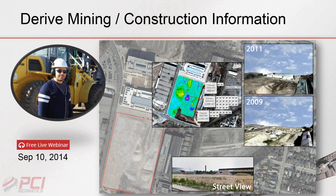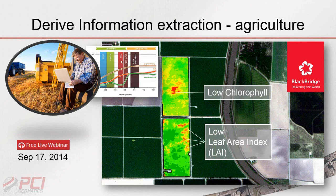We also delivered a webinar on agriculture, co-delivered with Blackbridge Geomatics, owners of the RapidEye constellation of satellites. What's unique about that constellation is the red edge band, which sits between the red and the near-infrared and is a very good indicator of chlorophyll levels in vegetation. By running algorithms in Geomatica using RapidEye imagery, we can determine which plants are healthy and identify better courses of action.